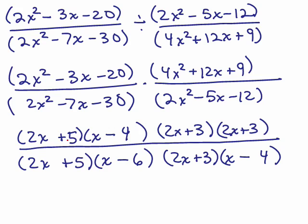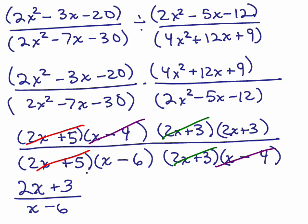2x + 5 can cancel with that 2x + 5, x - 4 will go with that x - 4, 2x + 3 with that 2x + 3, and this 2x + 3, and x - 6 is all that's left, so our answer is (2x + 3)/(x - 6). You know what simplifying, multiplying and dividing rational expressions really does? It makes you practice your factoring and being very careful.